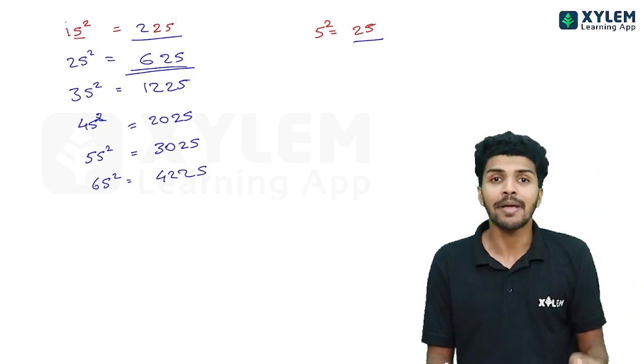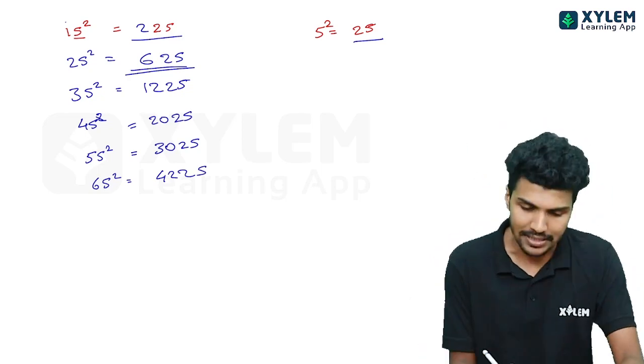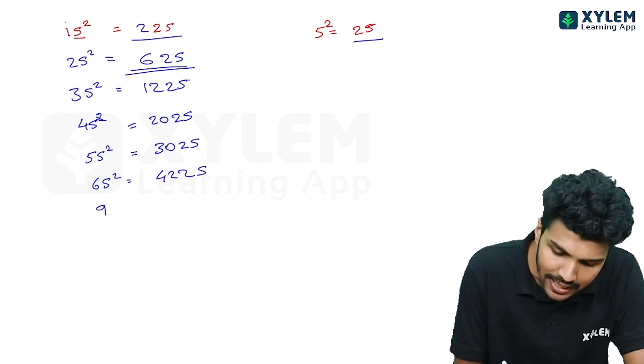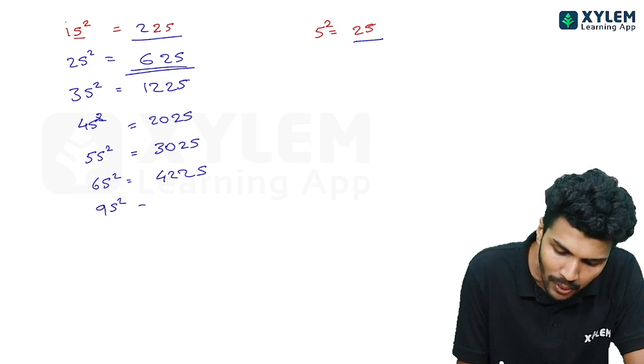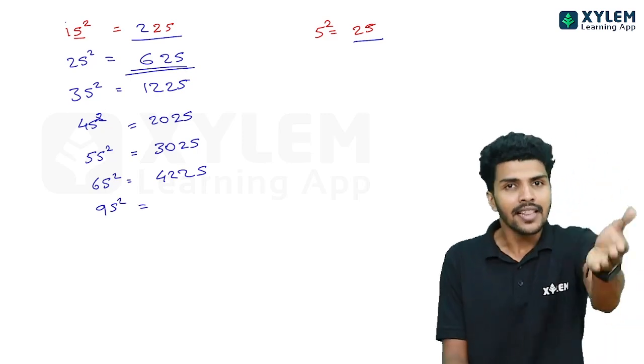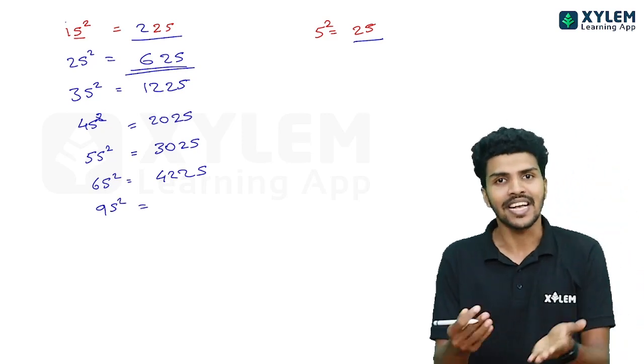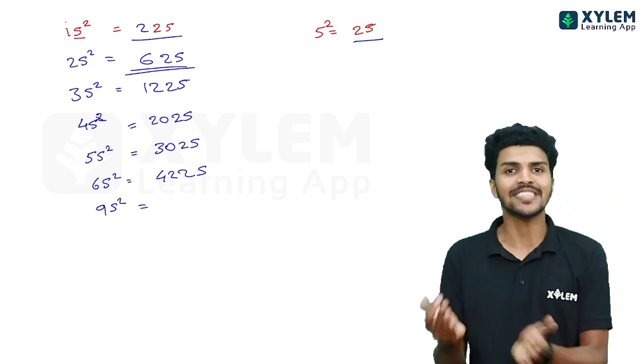You can calculate on your calculator to verify. Now, can you write 95 squared? You can write it in the comments. Very simple.